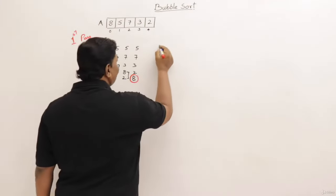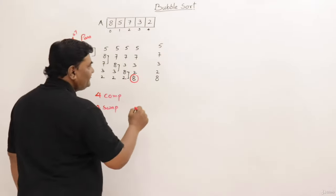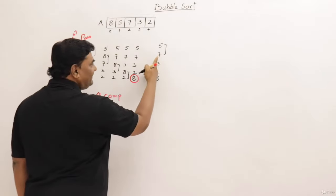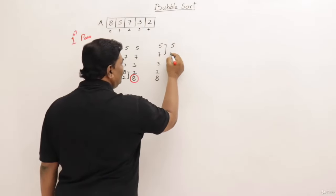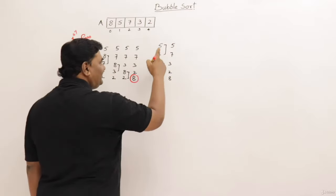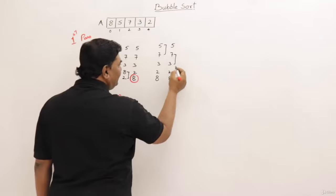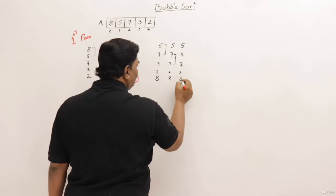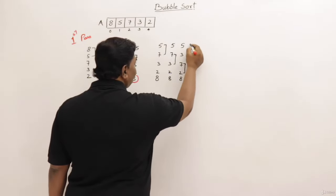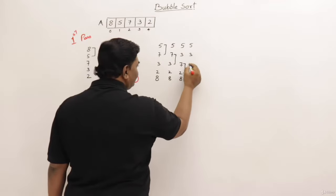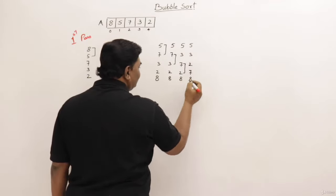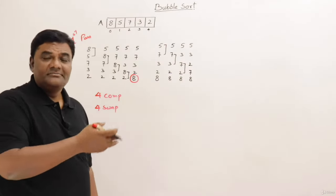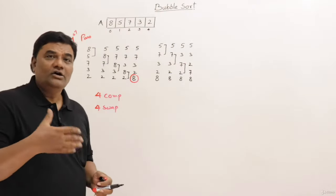For the second pass, I take this list of elements again. Comparing the first two: the first is not greater than the second, so they are not swapped and remain as they are. Next pair, seven and three: seven is greater, so we get five, three, seven, two, eight. Then comparing seven with two: seven is greater, so we swap — five, three, two, seven, eight. Comparing seven and eight is of no use because eight is already sorted, so I can avoid that comparison.